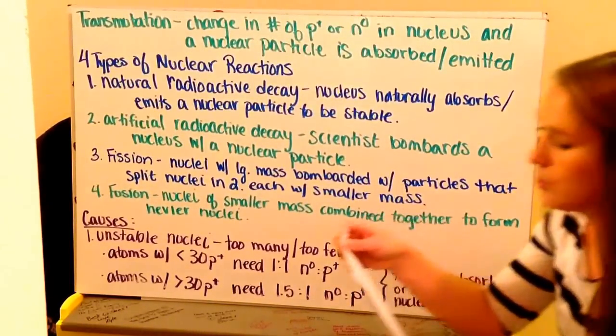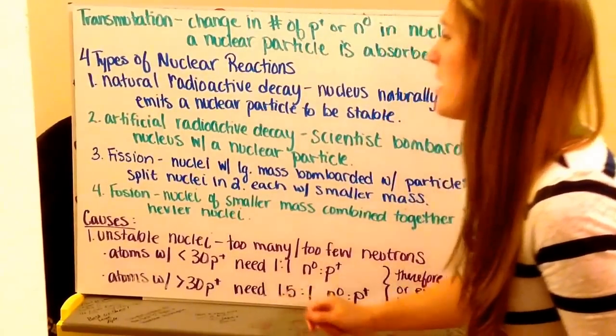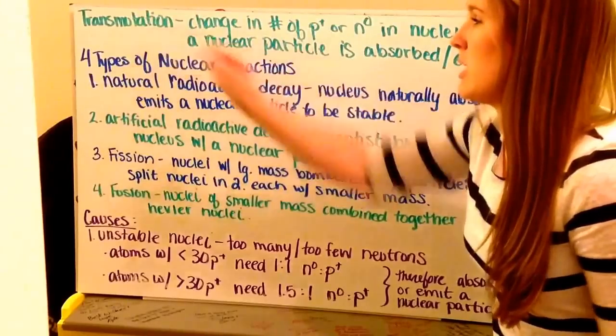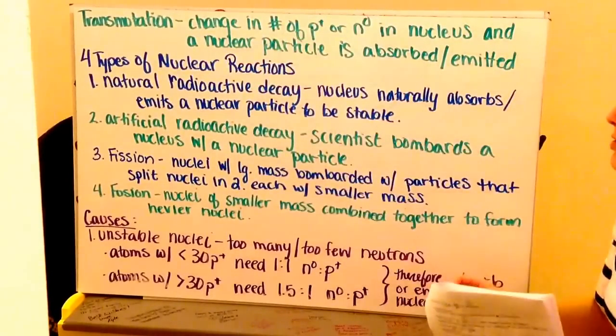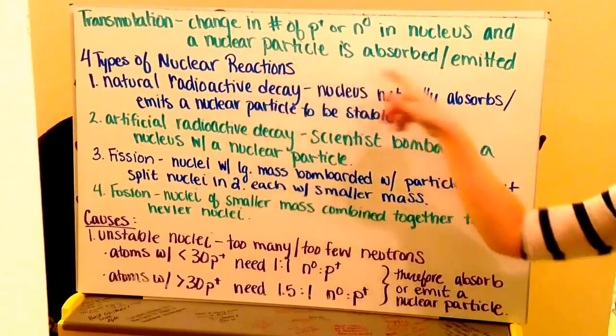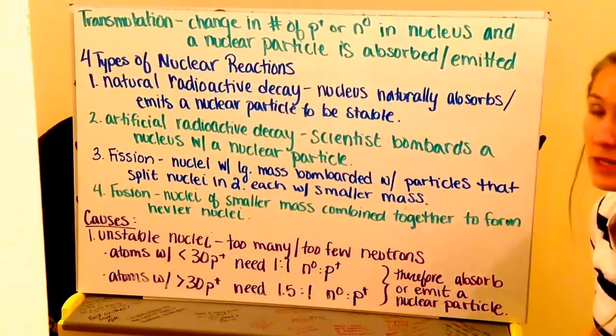Moving on to nuclear equations and four types of nuclear reactions. All reactions are going to cause a transmutation to occur, which is just the number of protons or neutrons in a nucleus. And a nuclear particle is either absorbed or emitted from this transmutation occurring.